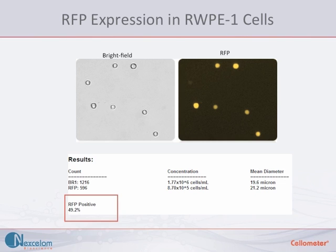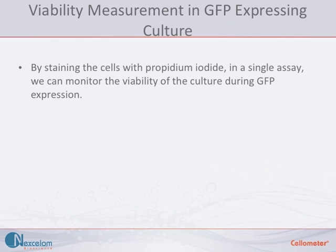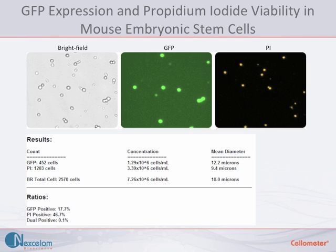It is also possible to examine GFP expression and cell viability in a single assay. This is accomplished by staining the cell sample with propidium iodide. In this example, GFP-expressing mouse embryonic stem cells have been stained with propidium iodide. Brightfield, GFP, and PI images were captured and analyzed.